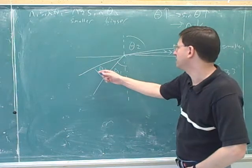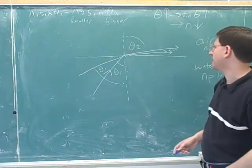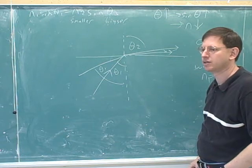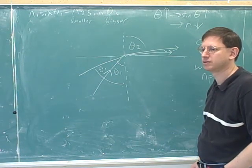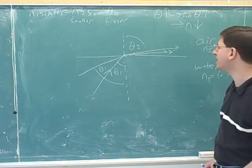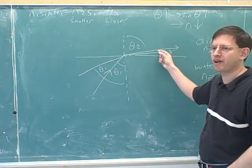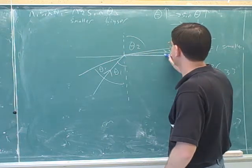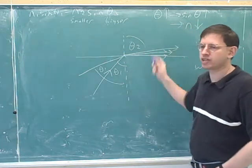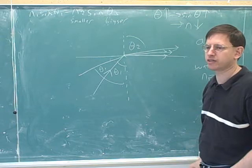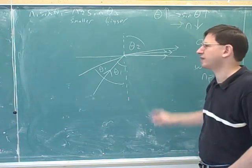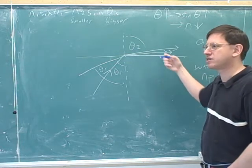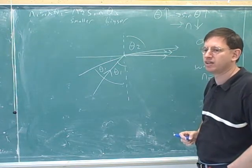So if we're increasing this theta 1, then the angle in the air has to bend even more from the normal. But there's a problem. This can't keep bending forever. Eventually, it's going to be just skimming along the surface. Eventually, this theta 2 is going to be so big that we're just skimming along the surface. What does it mean if the light is skimming along the surface? It basically means it hasn't been transmitted at all.